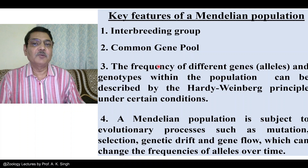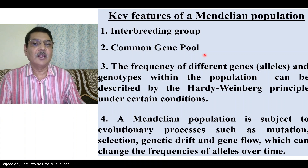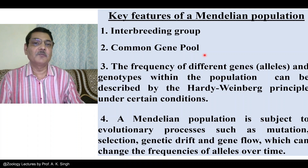We want to differentiate between a prokaryotic population and a eukaryotic population. Generally, eukaryotic populations are deployed in nature. This applies to all animal species, all plant species, fungi, and even protists — they are deployed in nature and capable to reproduce sexually. All such organisms, whether protists, fungi, plants, or animals, form populations in which genes are transferred from one generation to the other following the Mendelian pattern of inheritance, forming a Mendelian population.